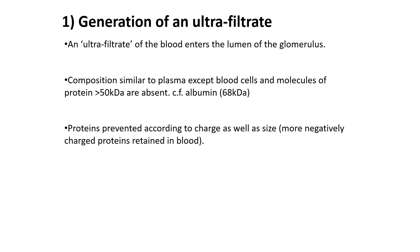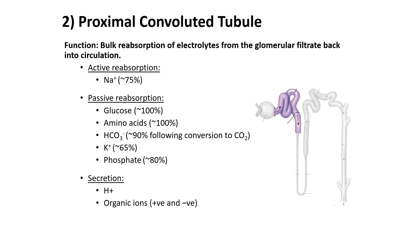The function of the proximal convoluted tubule is bulk reabsorption of electrolytes from the glomerular filtrate back into circulation. Via active reabsorption: sodium ions, 75%. Via passive reabsorption: glucose and amino acids, 100%; carbonate ions, 90%, following conversion of carbon dioxide; potassium ions, 65%; and phosphate, 80%. Secretion includes hydrogen ions and organic ions, both positive and negative.